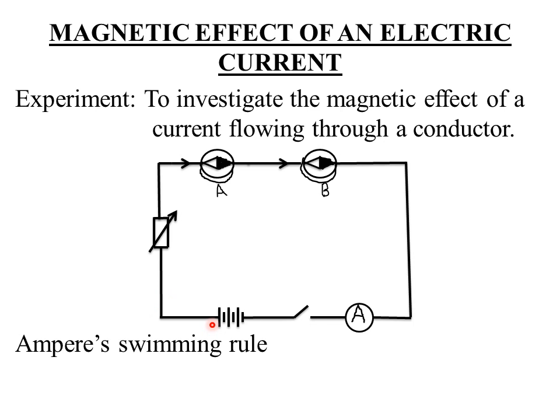If you imagine that you are swimming along the direction of the current — if this is the positive terminal, the current will flow in this direction. Remember, the larger bar always represents the positive terminal while the smaller bar represents the negative terminal of the battery.